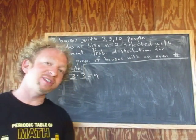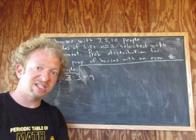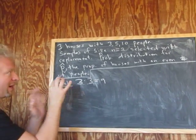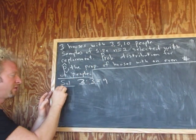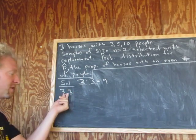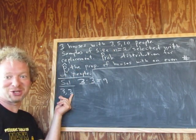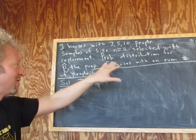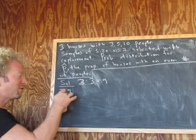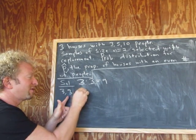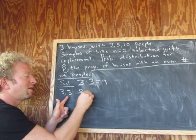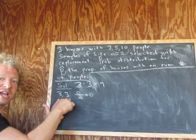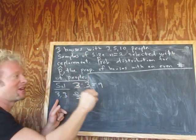Now we're going to take every single sample from this population and list the sample proportion. The first possible sample is 3 and 3. P-hat is the proportion of houses with an even number of people. There are zero even numbers out of two houses, so p-hat equals zero. The next sample is three and five — again, zero even numbers out of two numbers, so p-hat equals zero.